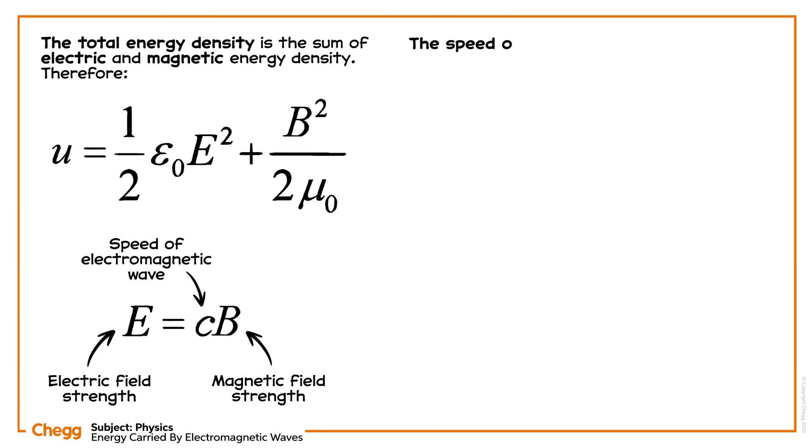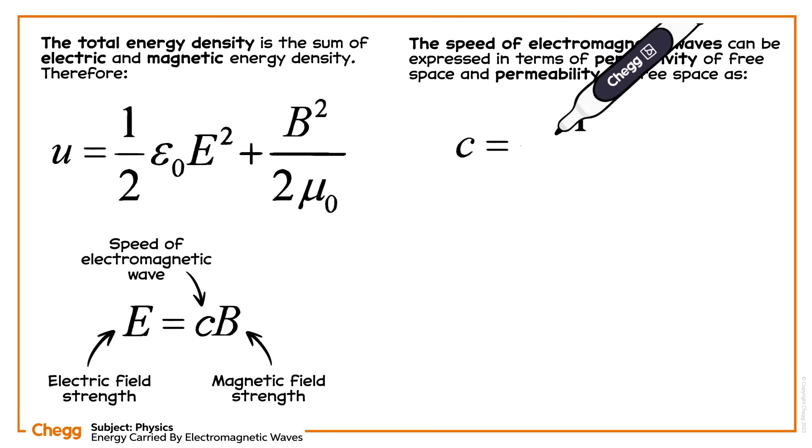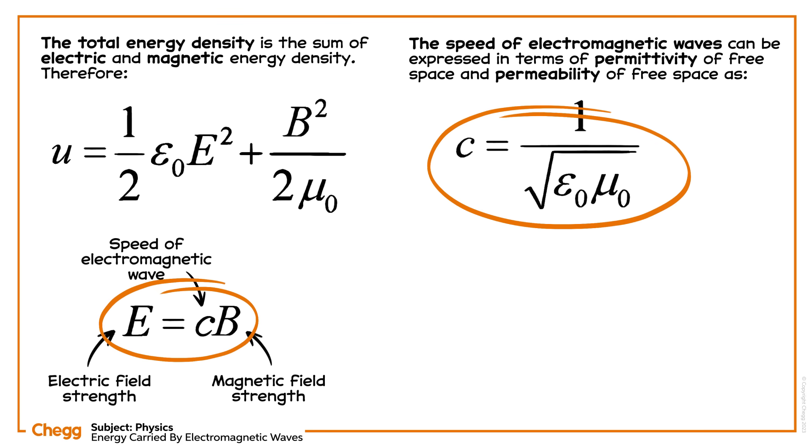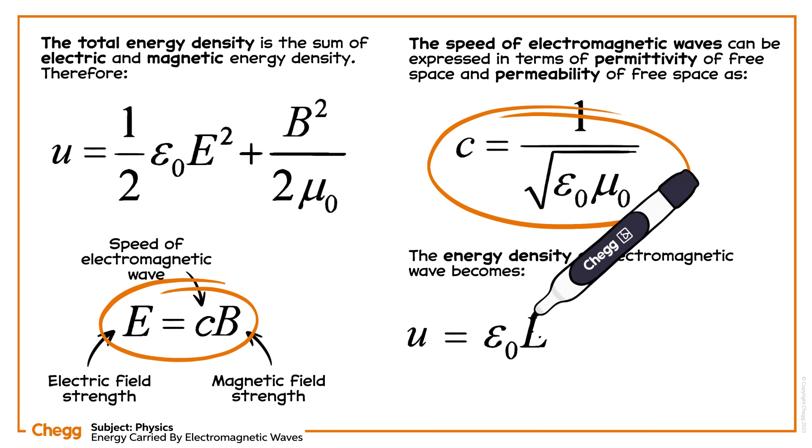Thus, the speed of electromagnetic waves can be expressed in terms of permittivity of free space and permeability of free space as follows. Now, on substituting the two relations we just described, the density of electromagnetic wave becomes this, B squared over mu naught.